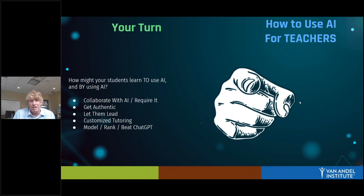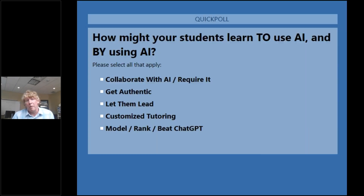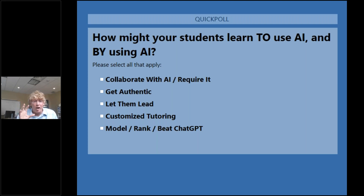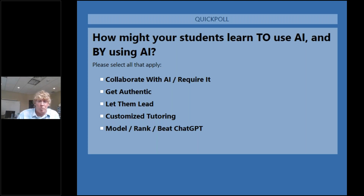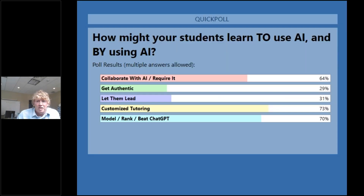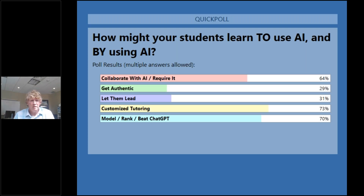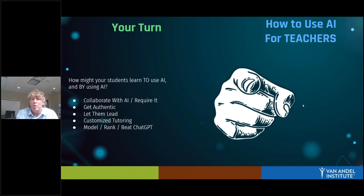It's time for our penultimate poll. I'm curious what you're interested in using. The results: 73% customized tutoring, 70% model/rank/Beat ChatGPT, 64% collaborate with AI and require its use, 31% let them lead, and 29% get authentic. I love to see those high numbers — I'm glad you're finding value in this and I cannot wait to hear more about how you are putting it to use.